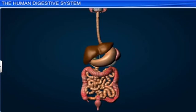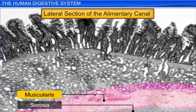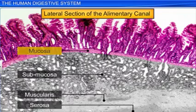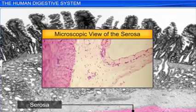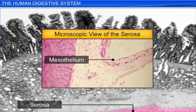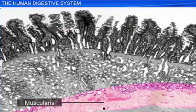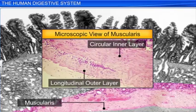The wall of the anus, as well as other organs of the alimentary canal, is made up of four layers of tissues: namely, the serosa, muscularis, submucosa, and mucosa. The serosa, the outermost layer, is made up of a thin mesothelium along with some connective tissues. The serosa is followed by the muscularis, a muscle layer made up of a circular inner layer and a longitudinal outer layer of smooth muscle cells.